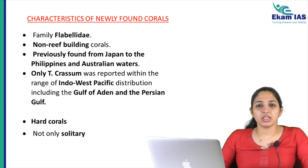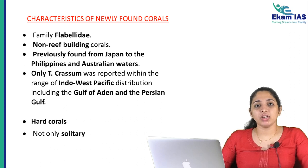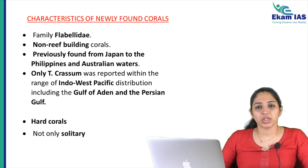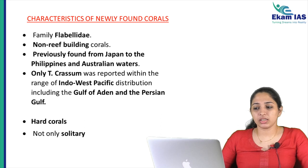Characteristics of newly found corals: These corals belong to the family Flabellidae and all 4 are non-reef building corals. In India, reef-building corals are seen — the best example is Lakshadweep Island, which is a coral island. These 4 corals were found earlier in waters from Japan, Philippines, and Australian waters. To the west of India, only Truncatoflabellum crescens was previously seen — in the Gulf of Aden and the Persian Gulf.